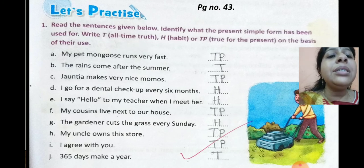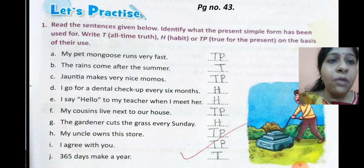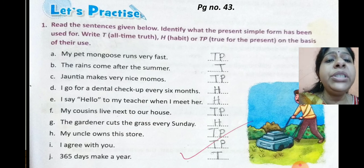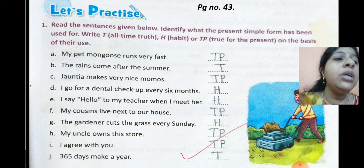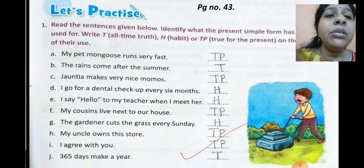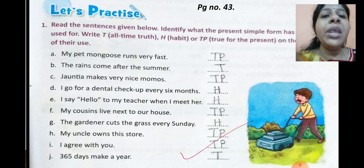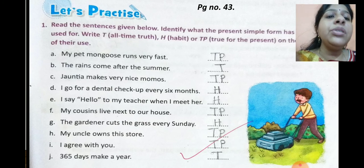Number F: 'My cousins live next to our house.' True for the present — they might move somewhere else in the future — write TP. Number G: 'The gardener cuts the grass every Sunday.' That is his fixed routine — write H. Number H: 'My uncle owns this store.' True for the present — write TP.